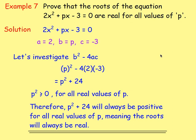Example 7: prove that the roots of the equation are real for all values of p. Here you don't need to work out a specific value — instead investigate what happens to the discriminant. Write down a, b, and c, work out b² - 4ac, and you get p² + 24. Since p squared is always greater than or equal to zero for all values of p, adding 24 means the discriminant is definitely always positive — so the roots are always real.